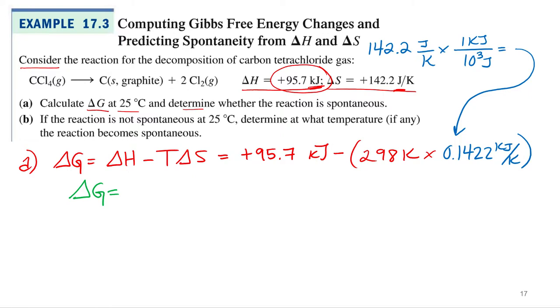All right, so what do we get for delta G? Positive 53.3. Positive 53.3. What are my units? Kilojoules. No, the Kelvin cancel. So we're left with the kilojoules.